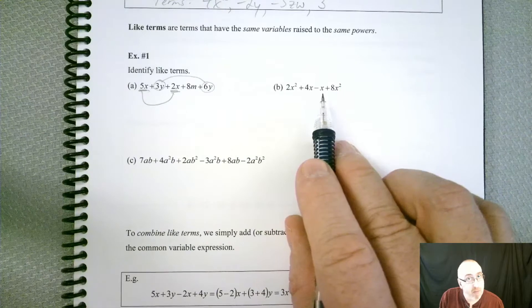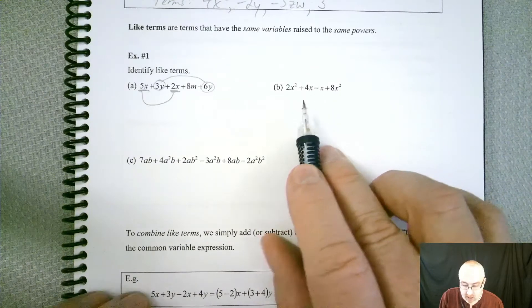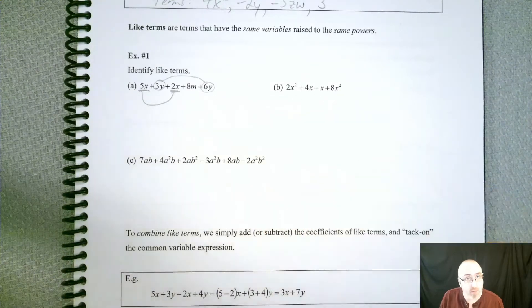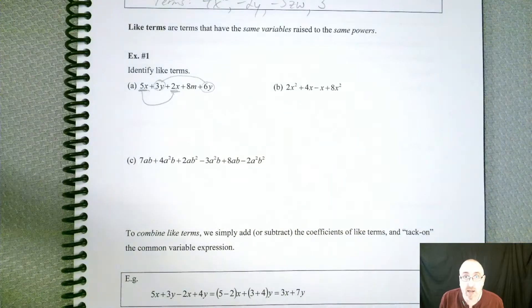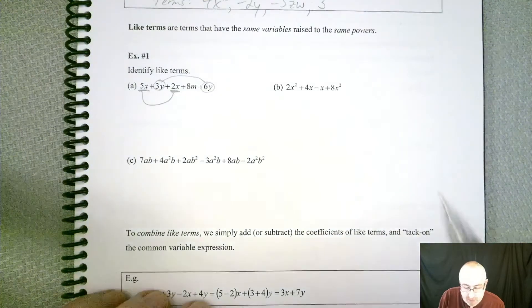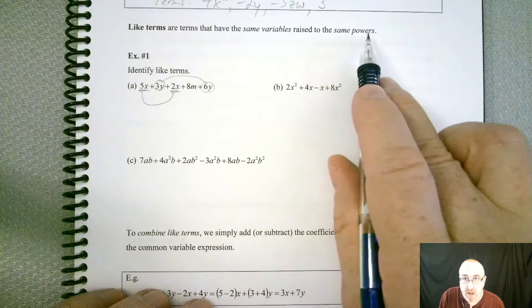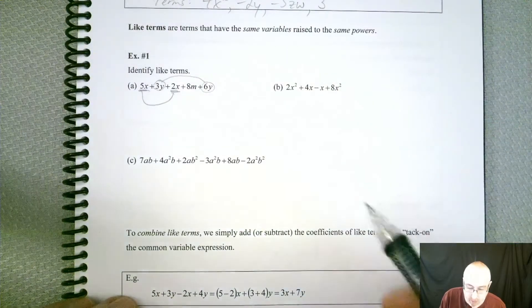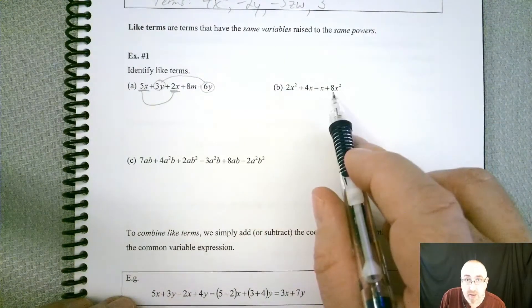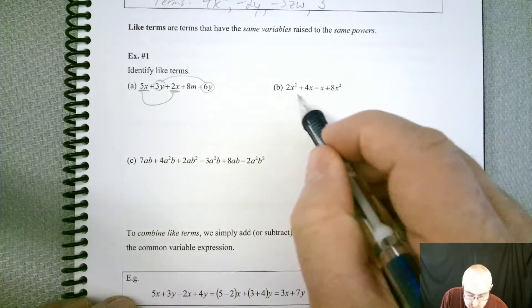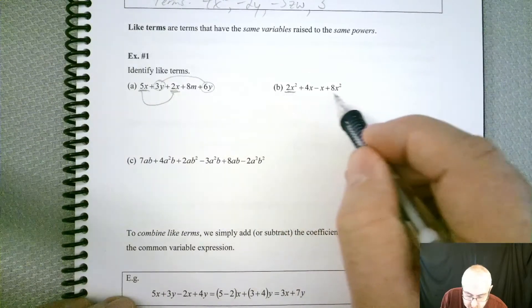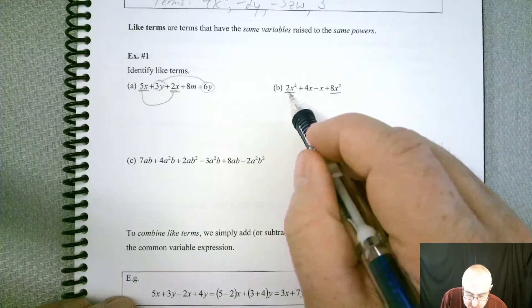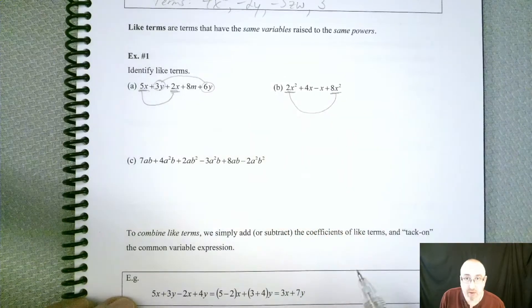Now, the next problem is one that people often confuse. Because they see a lot of x's and they say, well, everything can combine. It's all x's, right? Well, that's where the powers part comes in. They have to have the same powers as well. So even though they all have the same variable, they don't all have the same powers. So you can see that 2x to the second and 8x to the second, those go together and that's it.